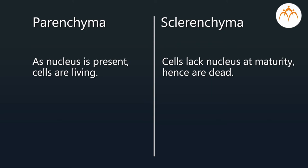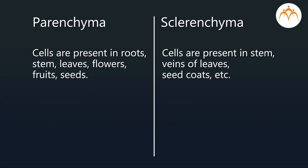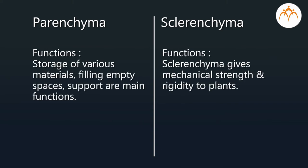Parenchyma cells are present in roots, stem, leaves, flowers, fruits, and seeds. Sclerenchyma cells are present in stem, veins of leaves, seed coats, etc. Functions of parenchyma include storage of various materials, filling empty spaces, and support. The main function of sclerenchyma is to give mechanical strength and rigidity to plants.